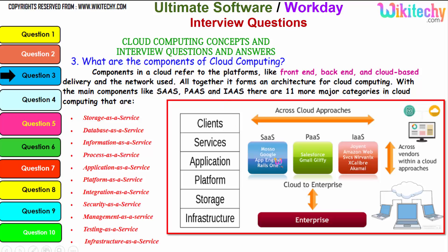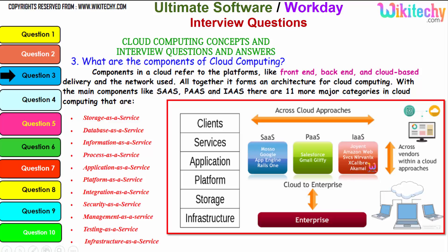These are additional services associated with the three major service models to form cloud computing. For Software as a Service, App Engine and Google Maso are typical examples. For Platform as a Service, examples include Gmail, Glyphi, and Salesforce. For Infrastructure as a Service, there are many companies such as Amazon Web Services and others.